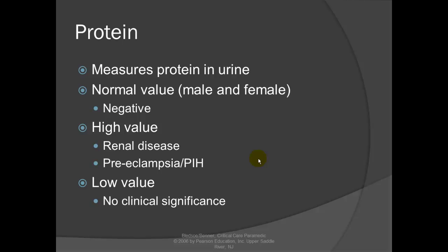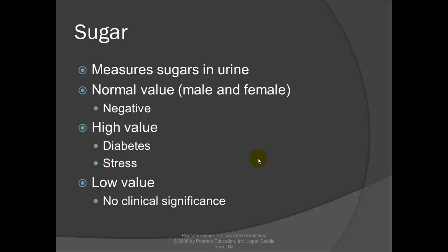Protein: measures protein in the urine. Normal value is negative. A high value could suggest renal disease, pre-eclampsia, or pregnancy-induced hypertension. Low values have no clinical significance. Sugar: measures glucose in the urine. Normal value is negative. A high value — excreting glucose or sugar in the urine — suggests diabetes or possibly stress from increased glucocorticoid hormones. Low value has no clinical significance.